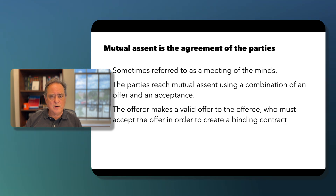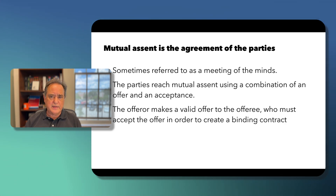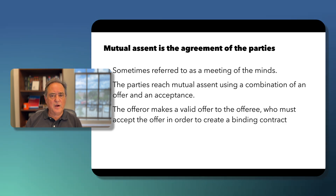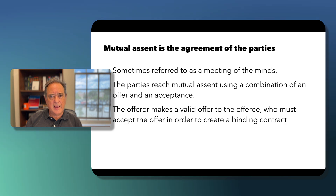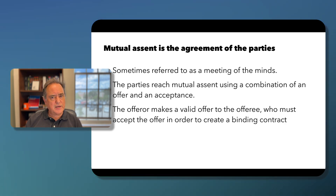The offeror makes an offer to the offeree, and the offeree must accept in order to create a binding contract. These positions can change. If I offer to sell you my computer for $500, I am the offeror and you are the offeree. If you say you won't pay $500 but will pay $300, you've rejected my offer and become the offeror — now I'm the offeree and I can accept or reject your offer.